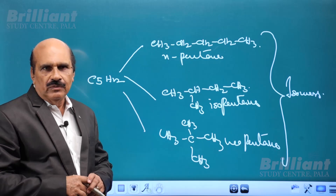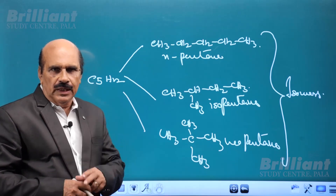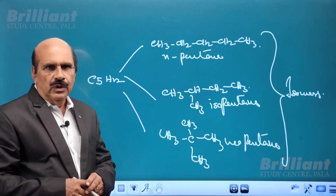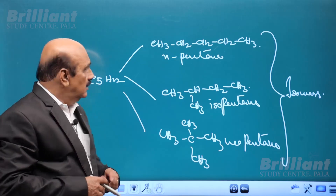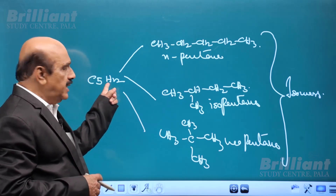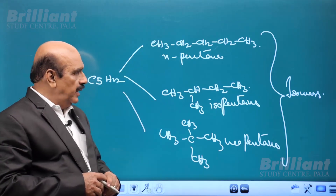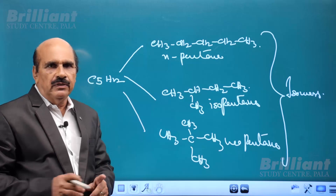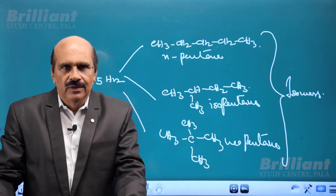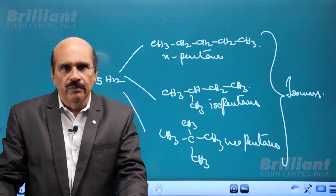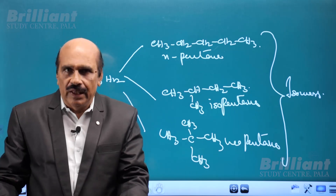Now we have seen three examples. One is C2H6O — two compounds, ethyl alcohol and dimethyl ether. Second is C4H10 — two compounds, normal butane and isobutane. Third is pentane C5H12 — three compounds, normal pentane, isopentane and neopentane. In all these cases the molecular formula is the same but the compounds are different. This phenomenon is called isomerism and the compounds are called isomers.